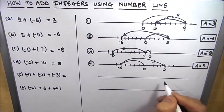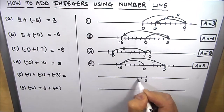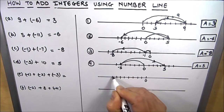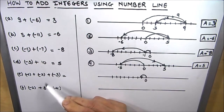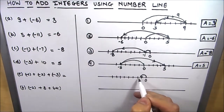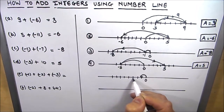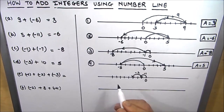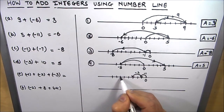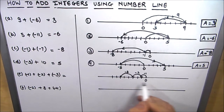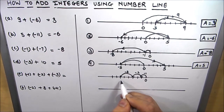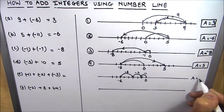The next example has all negative numbers. I'll mark 0 and make some divisions first. We take negative 1, then add negative 2 — move two more divisions in the same direction: 1, 2. Then add negative 3: 1, 2, 3. We count the divisions from 0 — we have moved 1, 2, 3, 4, 5, 6 on the negative side. The answer is negative 6.